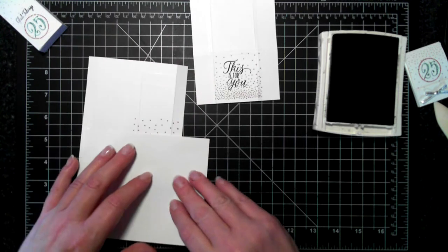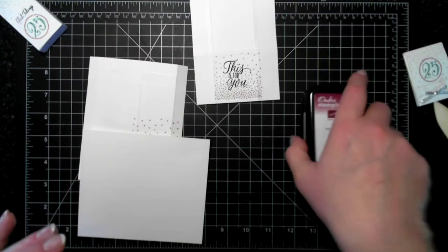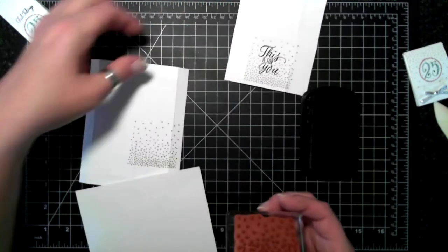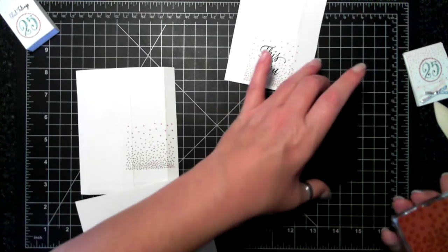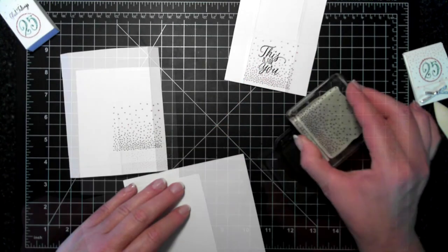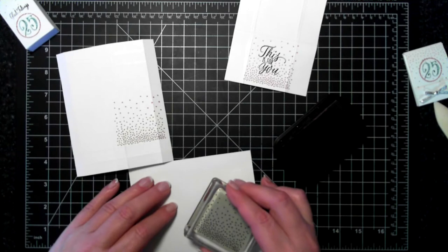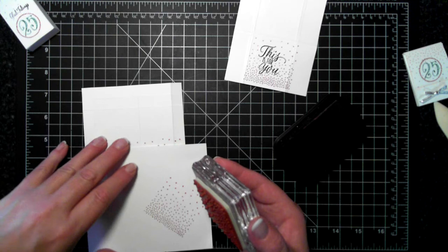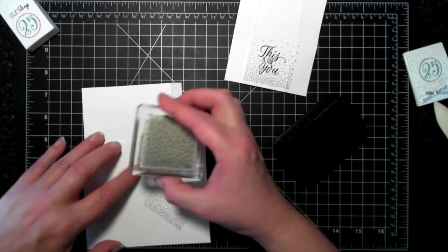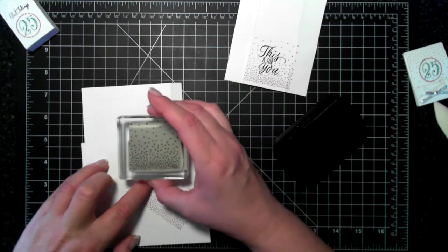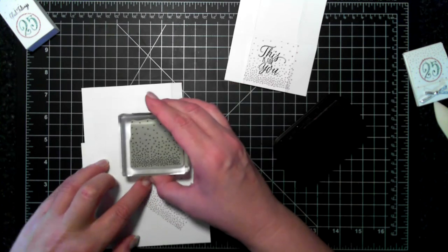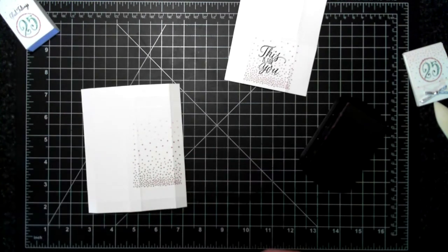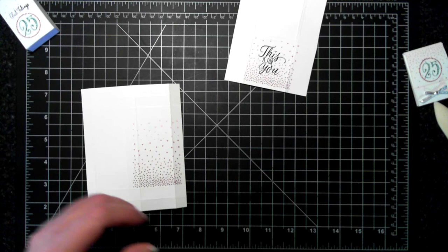I'm going to just do one more little step here. I think I want the dots to sort of continue up here. So I'm going to ink this baby up again. Then I'm going to stamp off. I'm going to cover where I actually had stamped. And I even got more of an ombre effect which is kind of what I wanted.